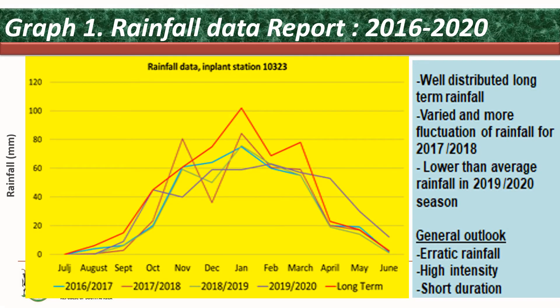This is the graph of rainfall, which was taken at the station called Inplants in Ranstenberg, station number 10323. Looking at the vertical axis — that is rainfall in millimeters — and the horizontal axis showing the months together with the treatments. The most dominant red line of the graph is the long-term average rainfall, which increased with the onset of the summer months, reached its peak somewhere in December–January, and then started to fall at a slowing rate with the decline of the summer period.